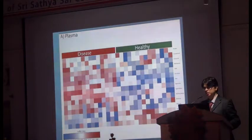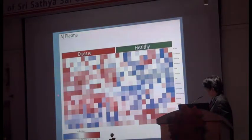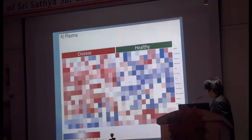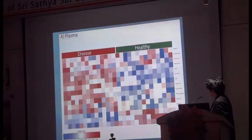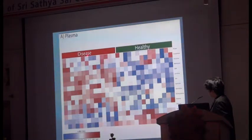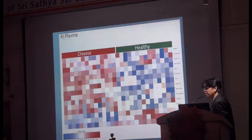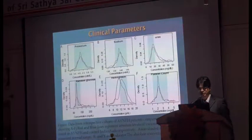Looking at the data chart, we can see how homocysteine differs between patients and controls. The blue represents healthy controls — homocysteine is very low — but in the disease group in plasma it becomes deep red. Homocysteine is very high and the difference is highly statistically significant.